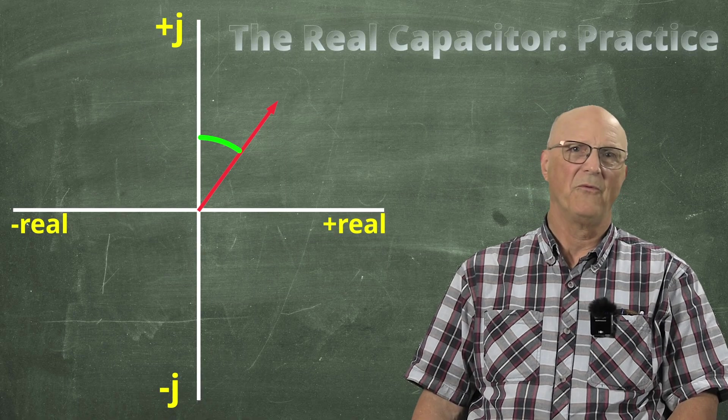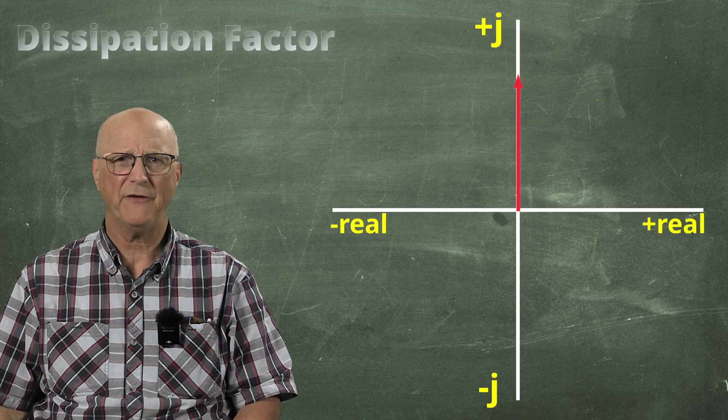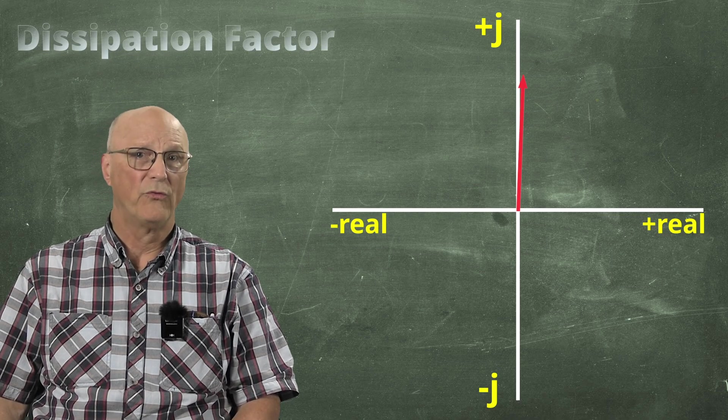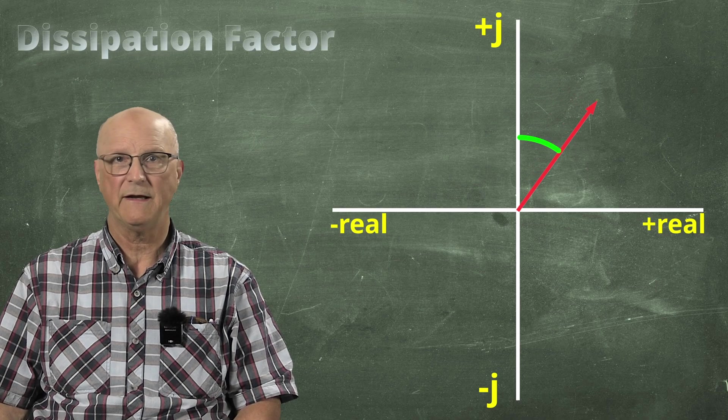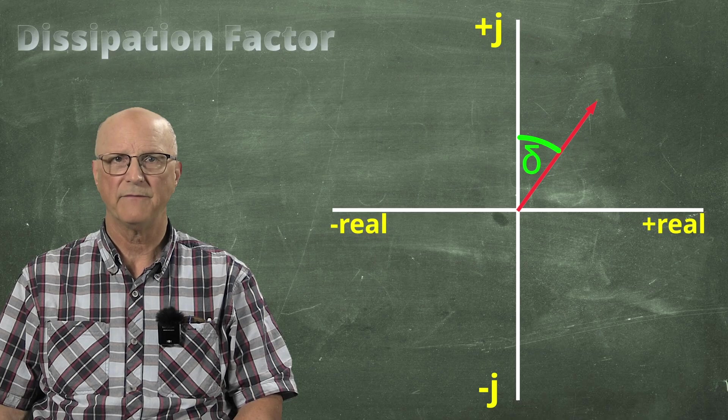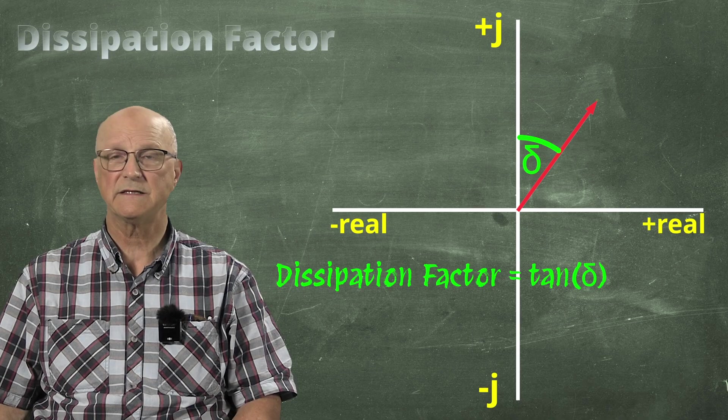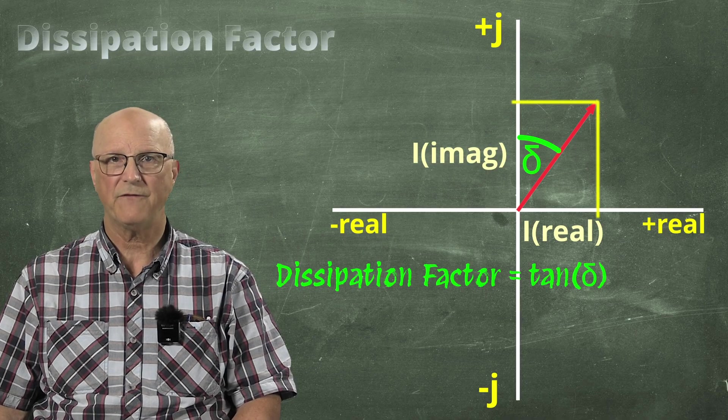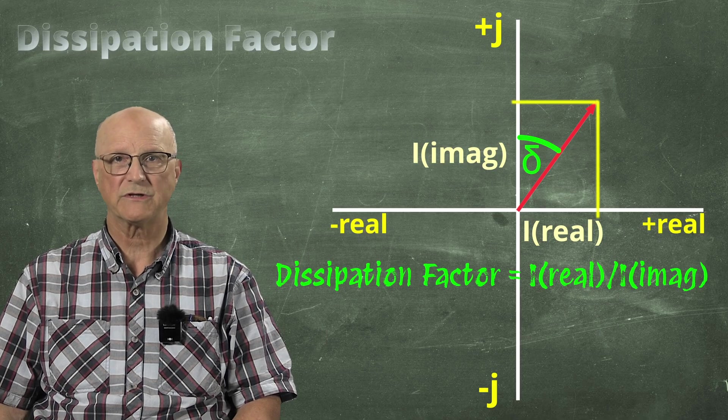So, what is this dissipation factor? Well, remember that the perfect, ideal capacitor's current would reside only on the vertical or reactive axis. And the real-world capacitor's current resides in the first quadrant with a definitive angle between it and the vertical axis. We will label this angle with the Greek letter delta. The tangent of this angle is referred to as the dissipation factor for the capacitor. Thus, the dissipation factor is equal to the real portion of this current divided by the reactive portion of this current.